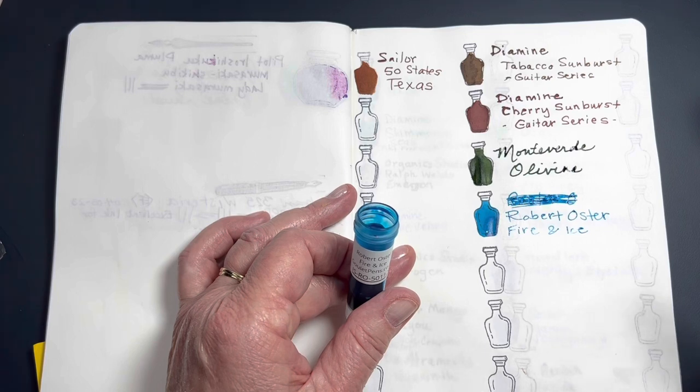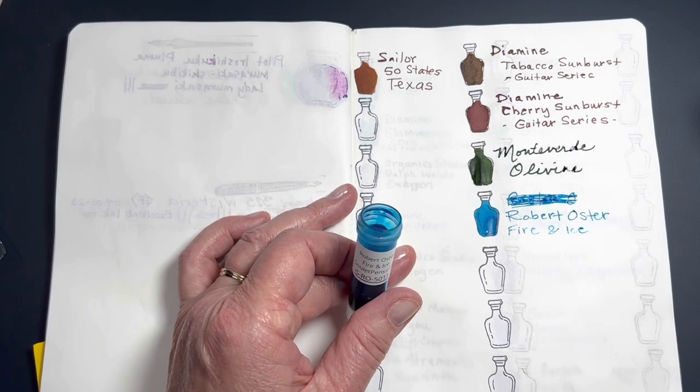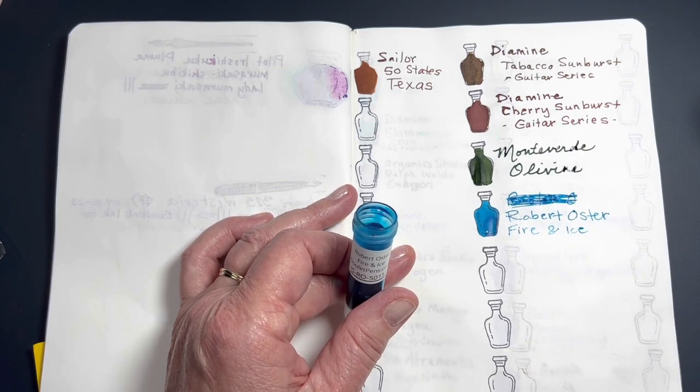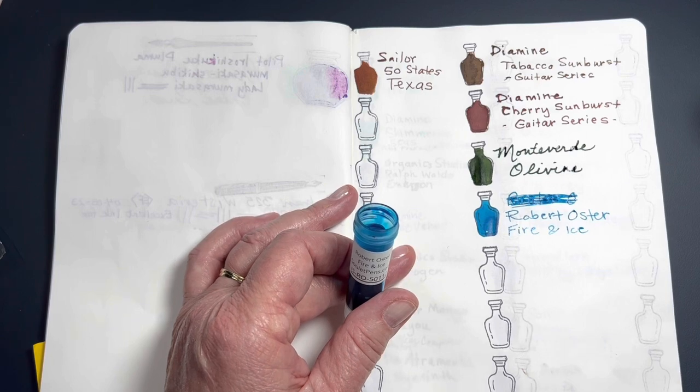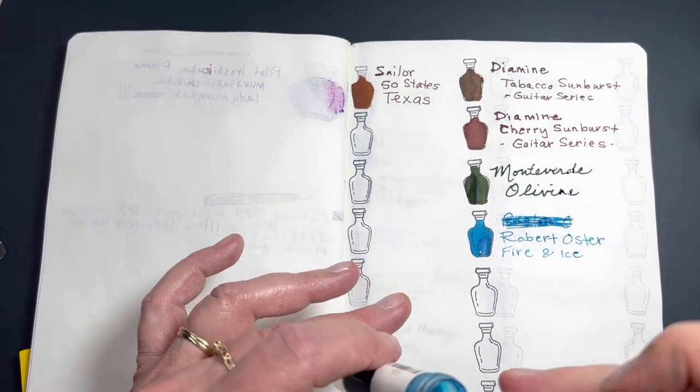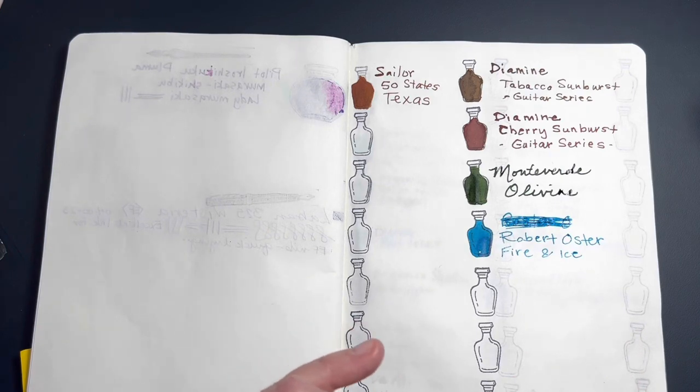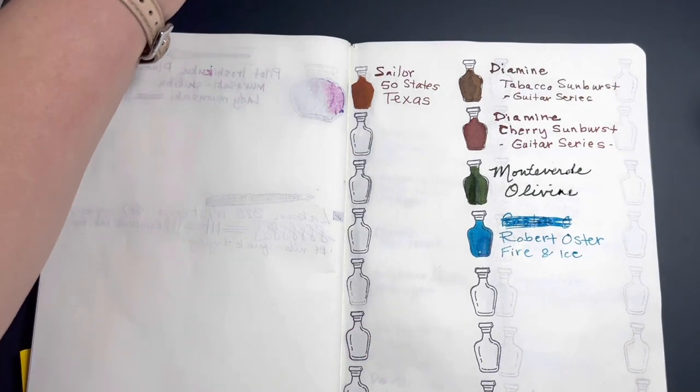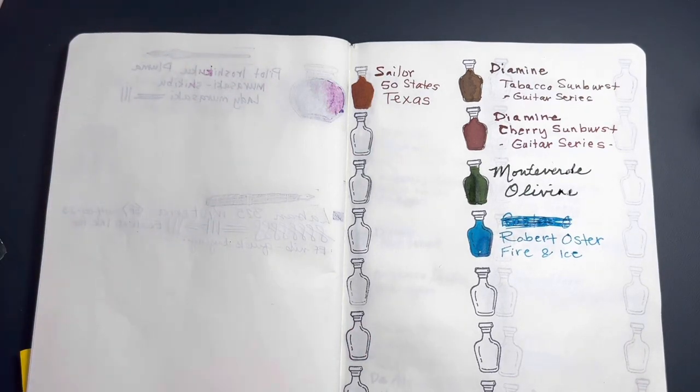This could be a nice contender for a turquoise or teal on the recent rainbow favorite inks that I recently shared. It's gorgeous. It reminds me of the Pelikan turquoise.